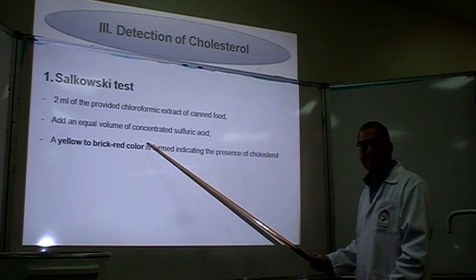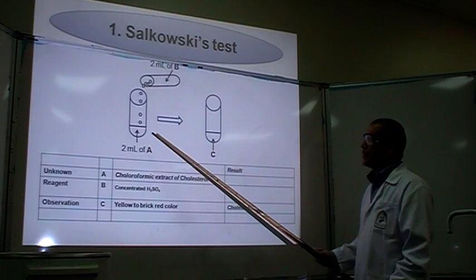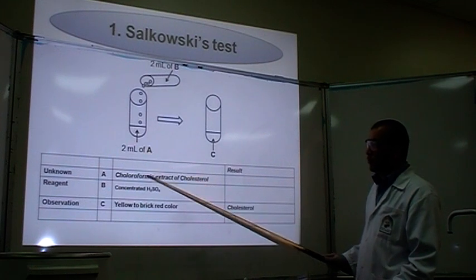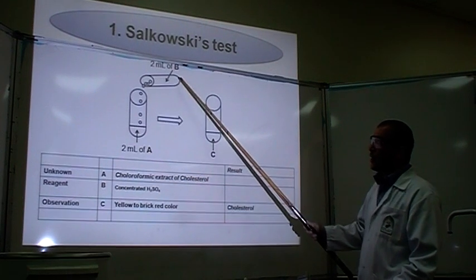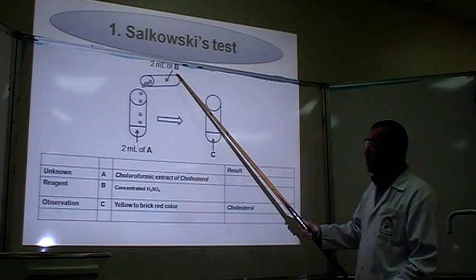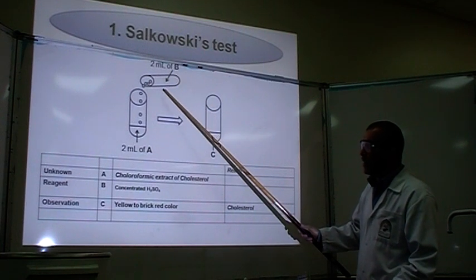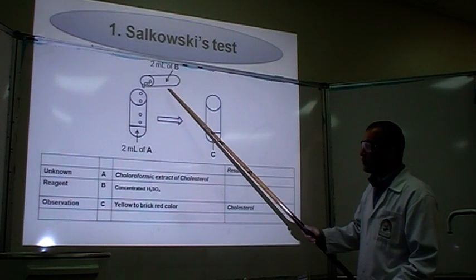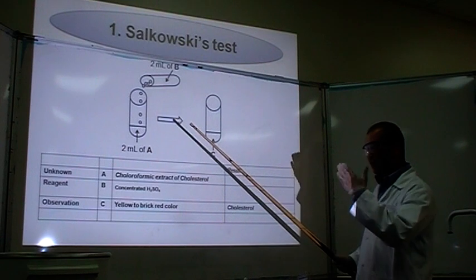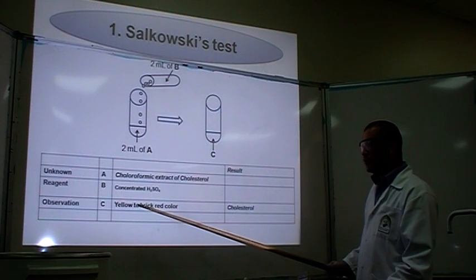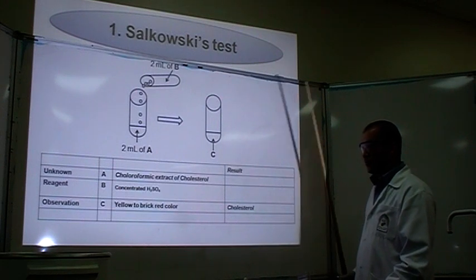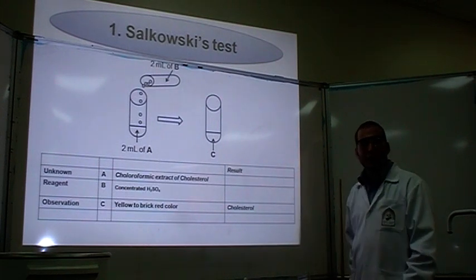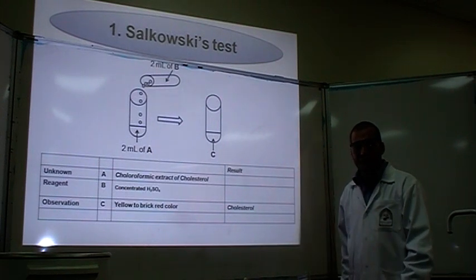To summarize: take two ml of chloroformic extract of cholesterol, then add two ml of concentrated sulfuric acid. You have to tilt the tubes, and you will get a yellow to brick-red color. So let's do the experiment — let's focus on the channel.